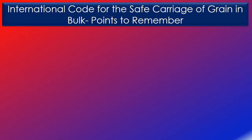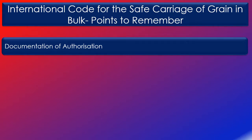Following are some of the main takeaways and points to remember for your oral examination. A document of authorisation is issued for every ship loaded in accordance with the regulations of the grain code. This document is issued by the administration, which is the flag state, or any other organisation recognised by the flag state to issue such a document. A ship may however be permitted to carry grain without a document of authorisation, as long as she meets the additional stability requirements for ships that do not have a document of authorisation to carry grain in bulk.